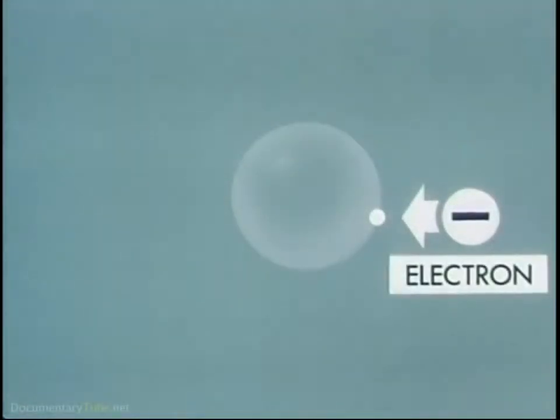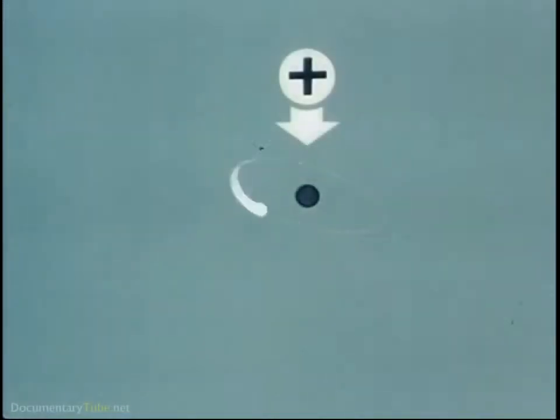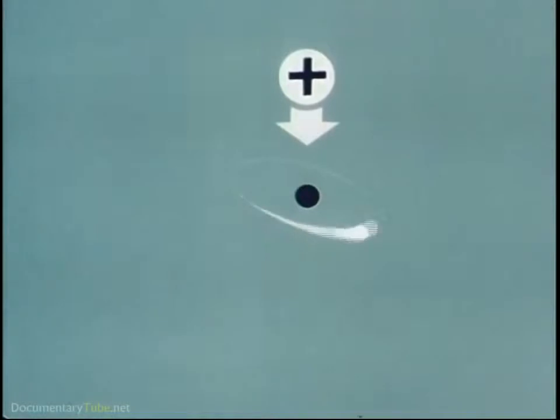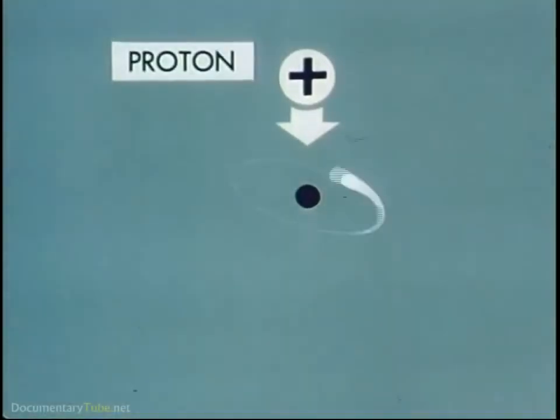This is an atom of hydrogen, which is one of the principal elements found in a golf ball, and is the simplest of all atoms. It consists of a negatively charged light particle called an electron, which revolves in an orbit about a nucleus. The nucleus of a hydrogen atom is made up of a single particle with a positive electrical charge, known as a proton.